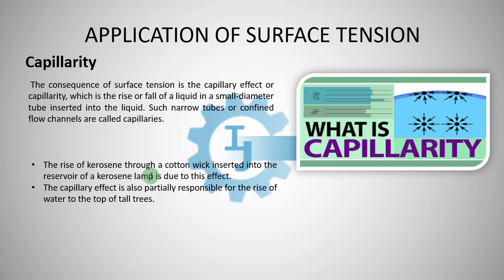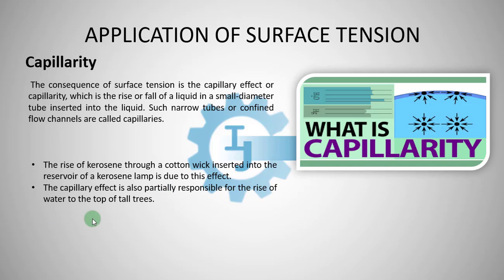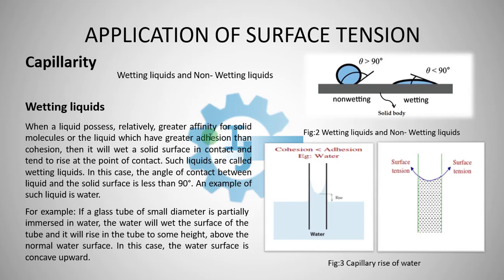What are the practical examples? The rise of kerosene through a cotton wick inserted into the reservoir of a kerosene lamp is due to this effect. The capillary effect is also partially responsible for the rise of water to the top of tall trees.